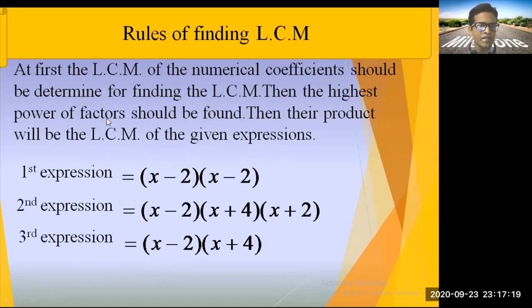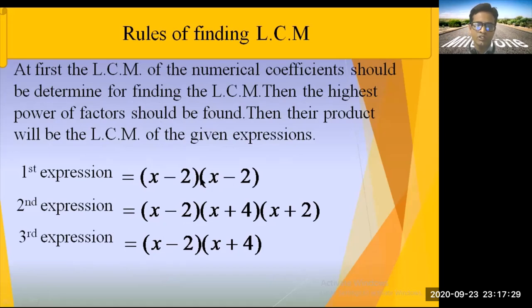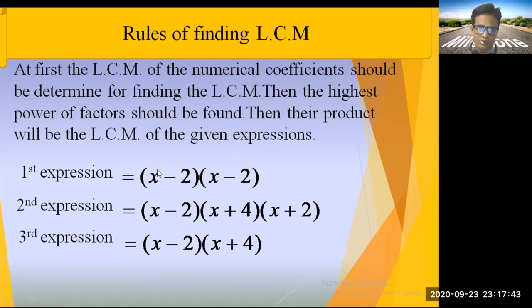The factor (x - 2) appears twice in the first expression, once in the second, and once in the third. The highest power is two, so we write (x - 2)² in the LCM.